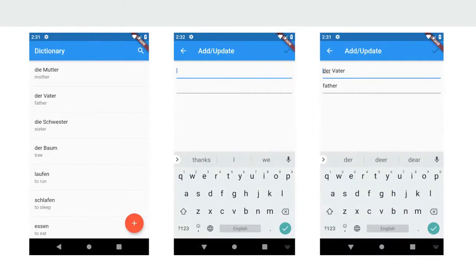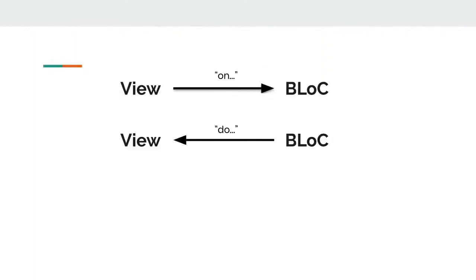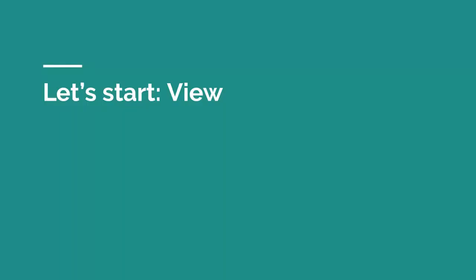Now let's implement BLoC in a non-trivial app. I've decided to take a dictionary app as an example with two screens: a list of vocabulary, and an add/update screen. For readability, I've used the following naming scheme: if an event is coming from the view to BLoC, such as a user input event, the sink has an 'on' prefix — for example, onBackPressed. When BLoC is making a change to the view, the stream has a 'do' prefix, such as doPop or doShowValidationResult. I like starting development from the end result, so let's start with the view.